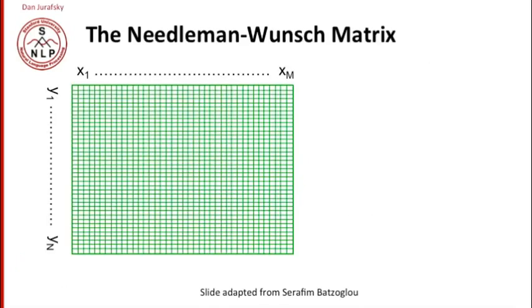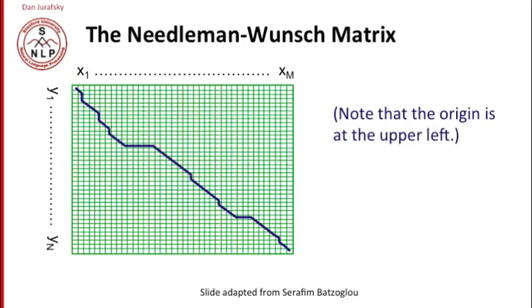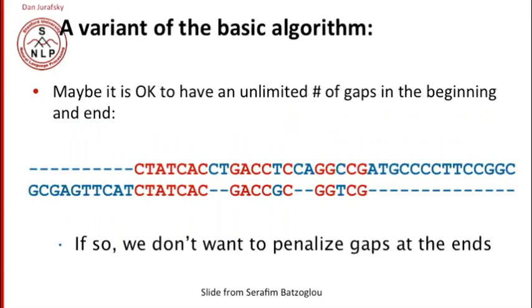So here's the Needleman-Wunsch matrix. And notice that as opposed to what we did in natural language processing, in general in computational biology, we put the origin at the upper left. So let's first look at some variants that are important in computational biology.